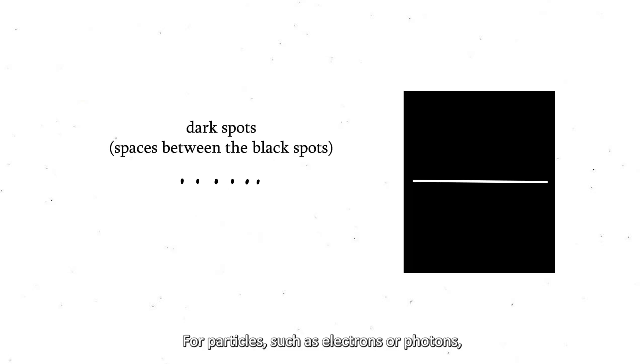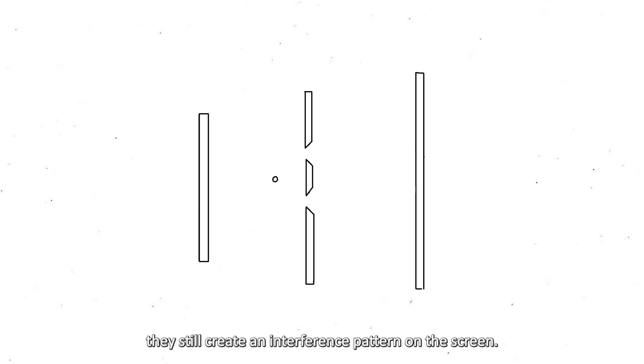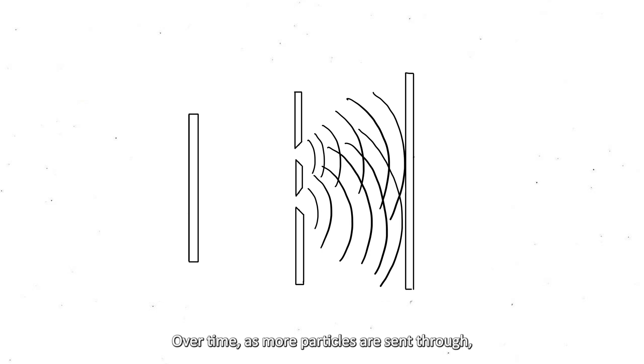For particles, such as electrons or protons, when they are sent out one at a time, they still create an interference pattern on the screen. Each individual particle behaves as if it passes through both slits simultaneously, exhibiting wave-like characteristics. Over time, as more particles are sent through, the interference pattern becomes more pronounced.